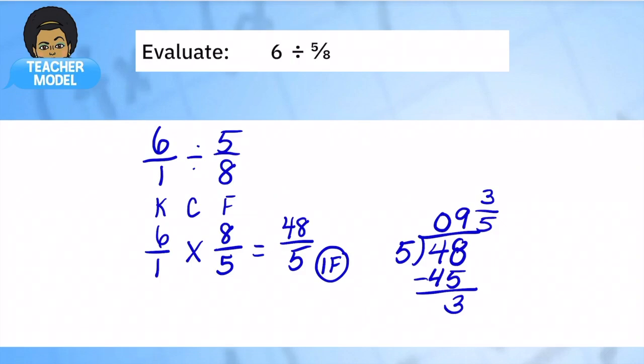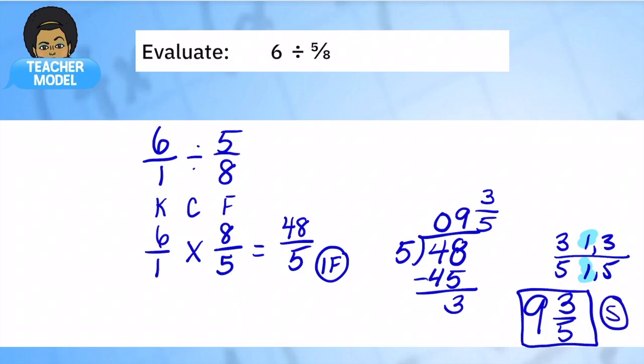Here are the factors of 3 and 5. 1 and 3, 1 and 5. Nope. They are already in simplest form. So our final answer to our problem is 9 and 3/5. This is simplified. There you have it.